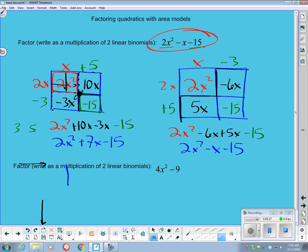My box is built correctly, and so my final answer, I'm going to read off of the outside dimensions of the box. Instead of expressing the area as a sum of these four pieces, I'm going to express it as a product of the length and width of my box, which are x minus 3 and 2x plus 5, and that is the factored form of 2x squared minus x minus 15.